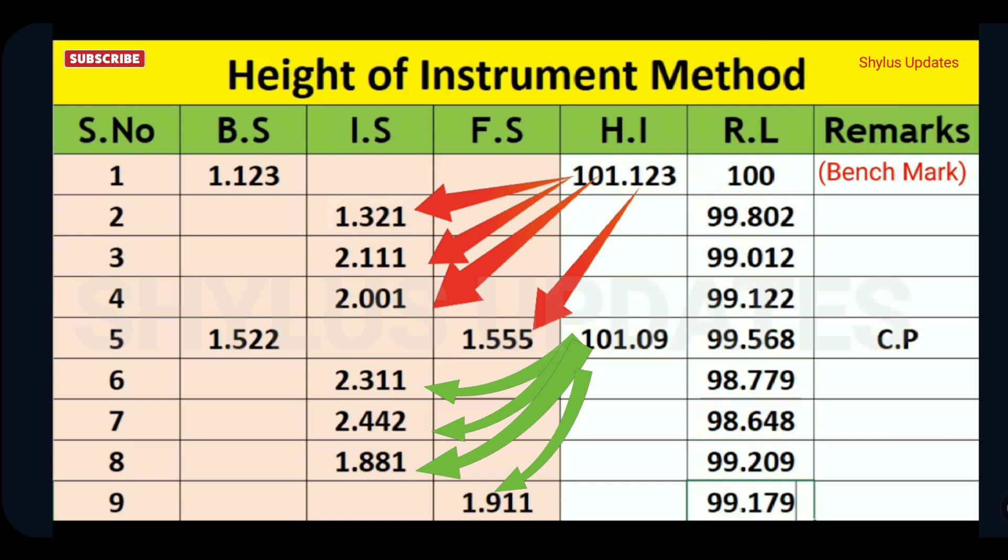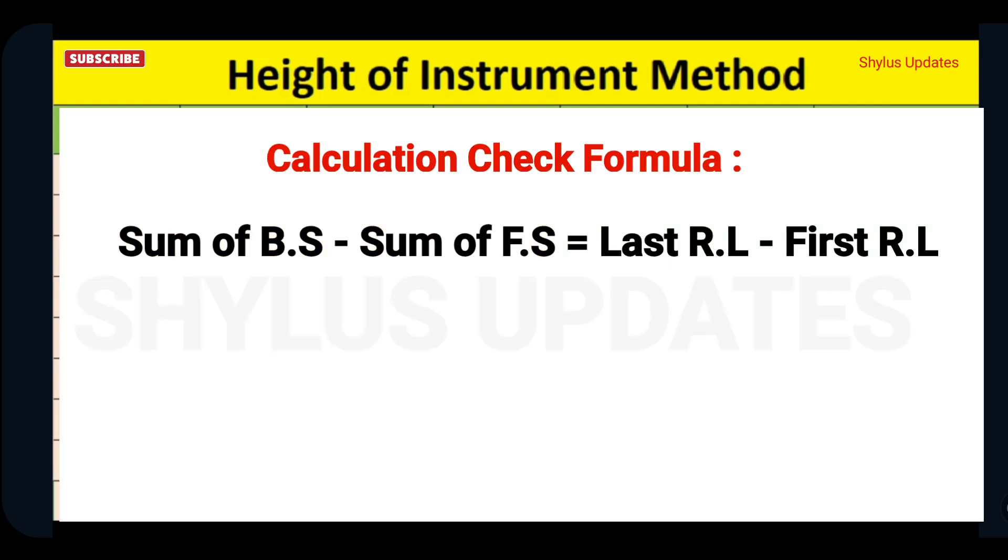But you might ask yourself, is my calculation correct? Don't worry, there is a formula to check it. The formula is: Sum of back site minus Sum of fore site is equal to Last reduced level minus First reduced level. When you do those calculations, you will get equal values. Hence, your calculations are absolutely right.